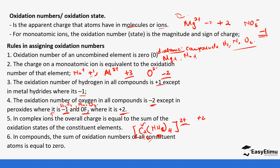In neutral compounds, the sum of the oxidation numbers of all constituent atoms is equal to zero. For example, in water, when you add the oxidation number of hydrogen and oxygen, the total is zero. We'll see examples in the next part.